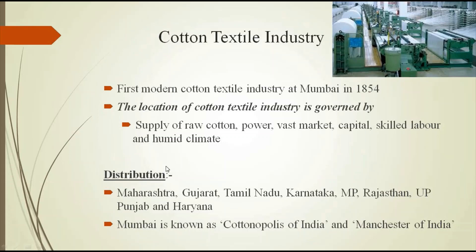The cotton textile industry is especially distributed in Maharashtra, Gujarat, Tamil Nadu, Karnataka, Madhya Pradesh, Rajasthan, Uttar Pradesh, Punjab, and Haryana. Most of the cotton textile industries are concentrated in Mumbai, so Mumbai is known as the Cottonopolis of India or Manchester of India. Like Manchester in England, most cotton textile industries are concentrated in Mumbai, so it is called Manchester of India.